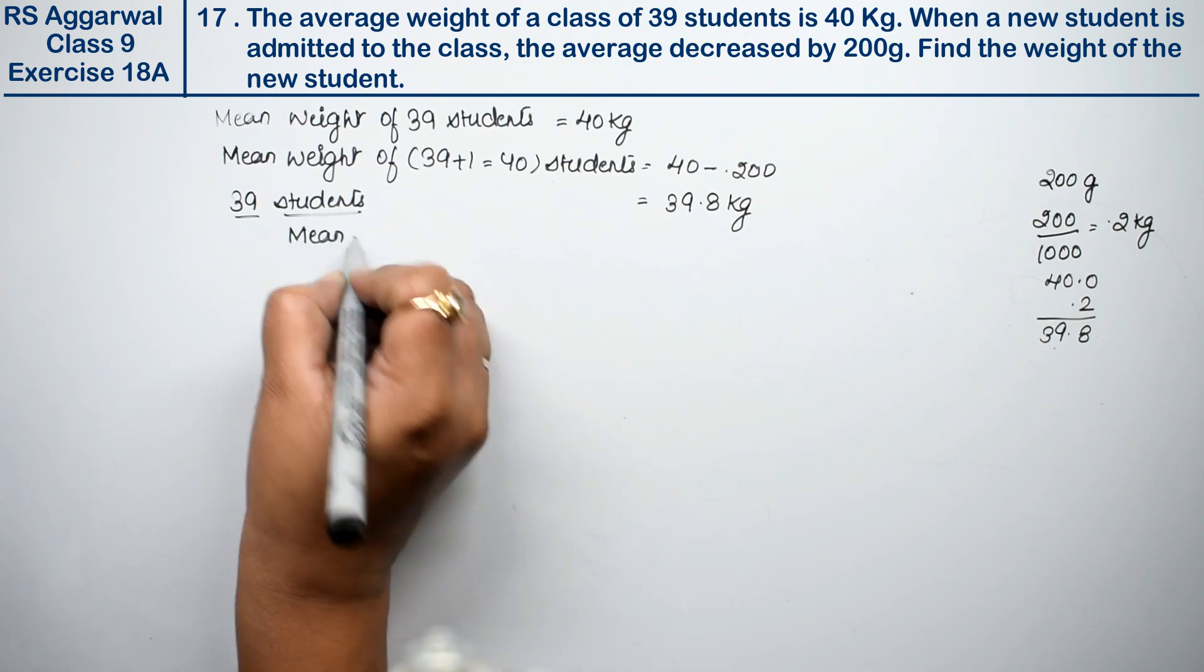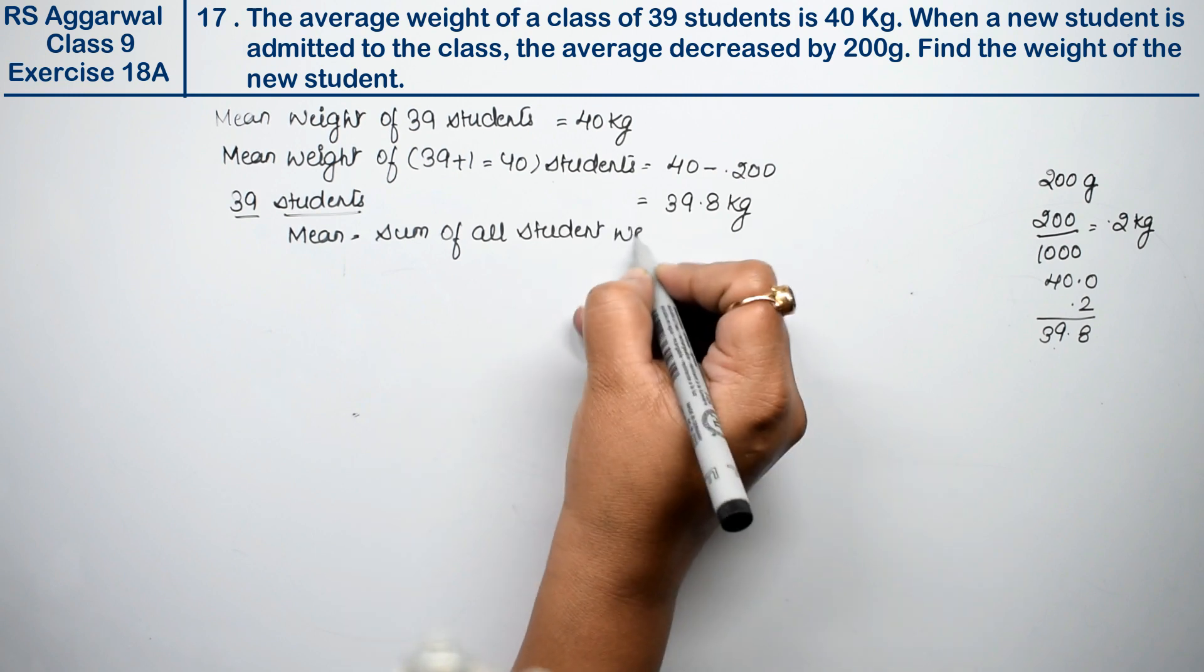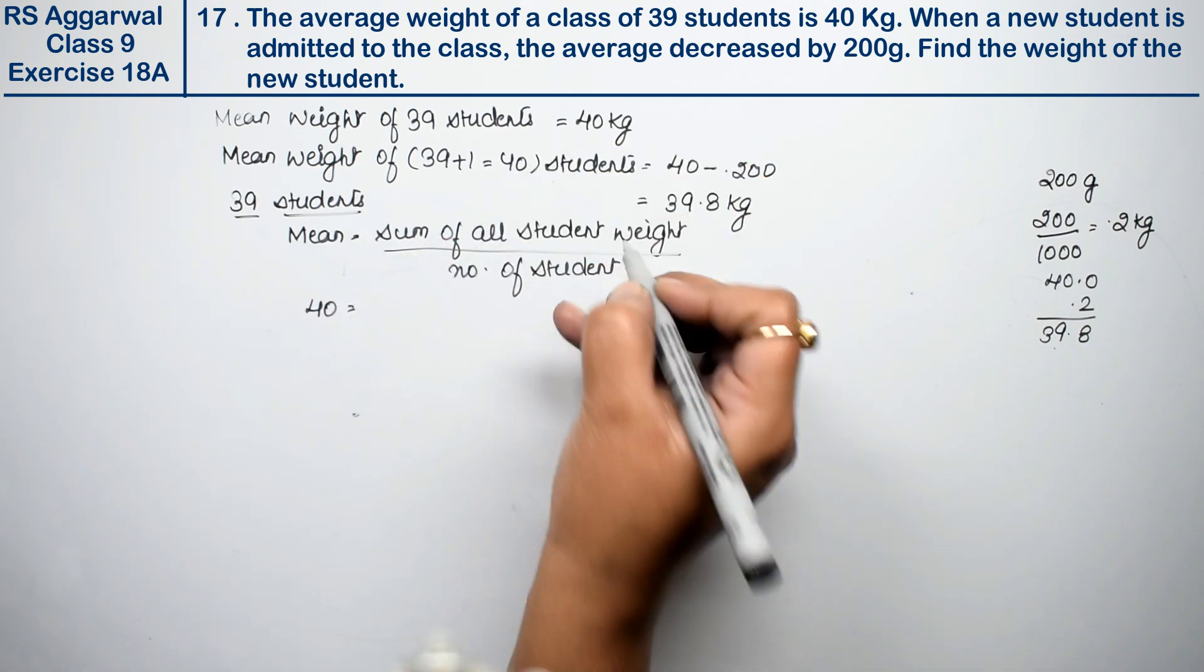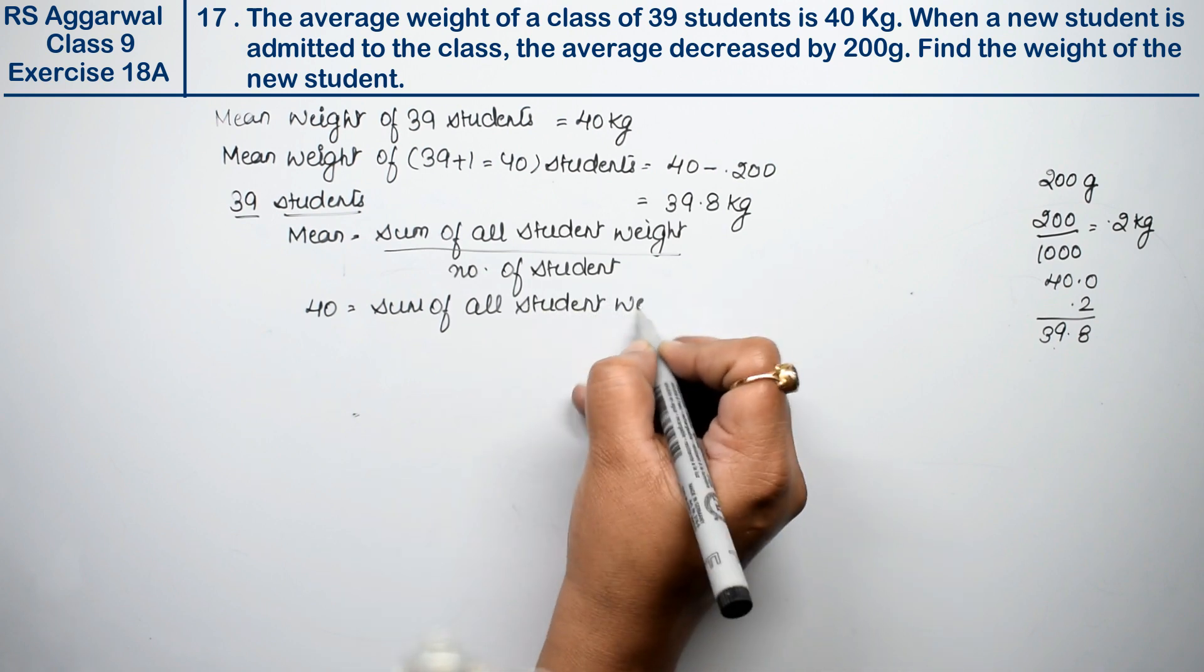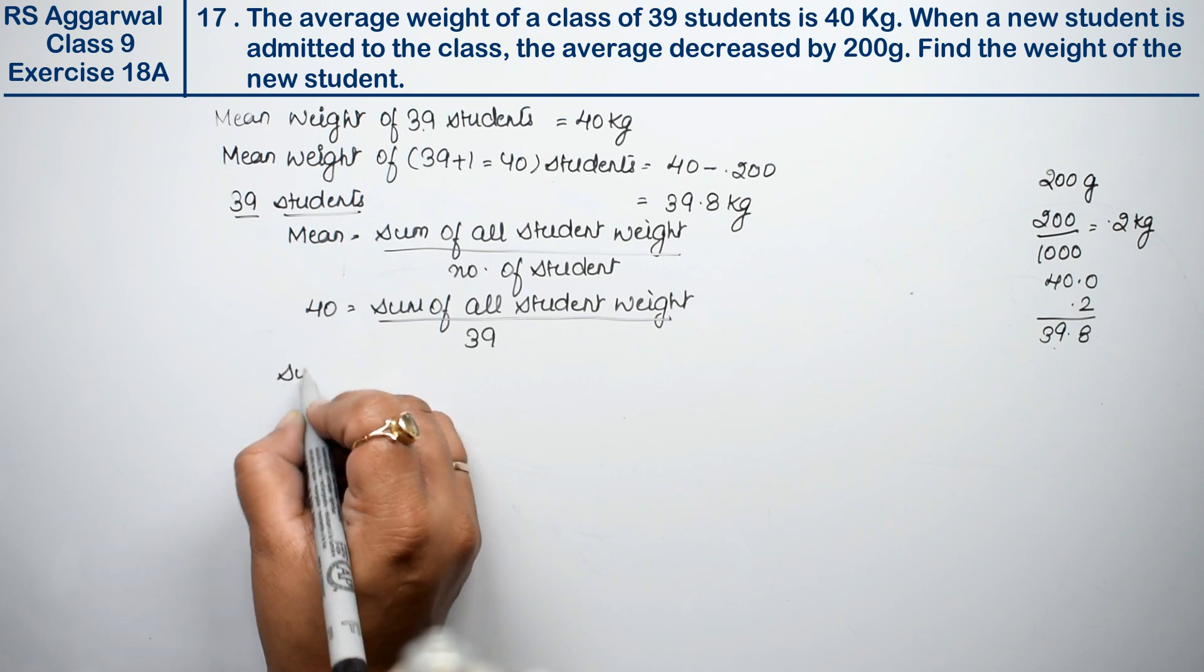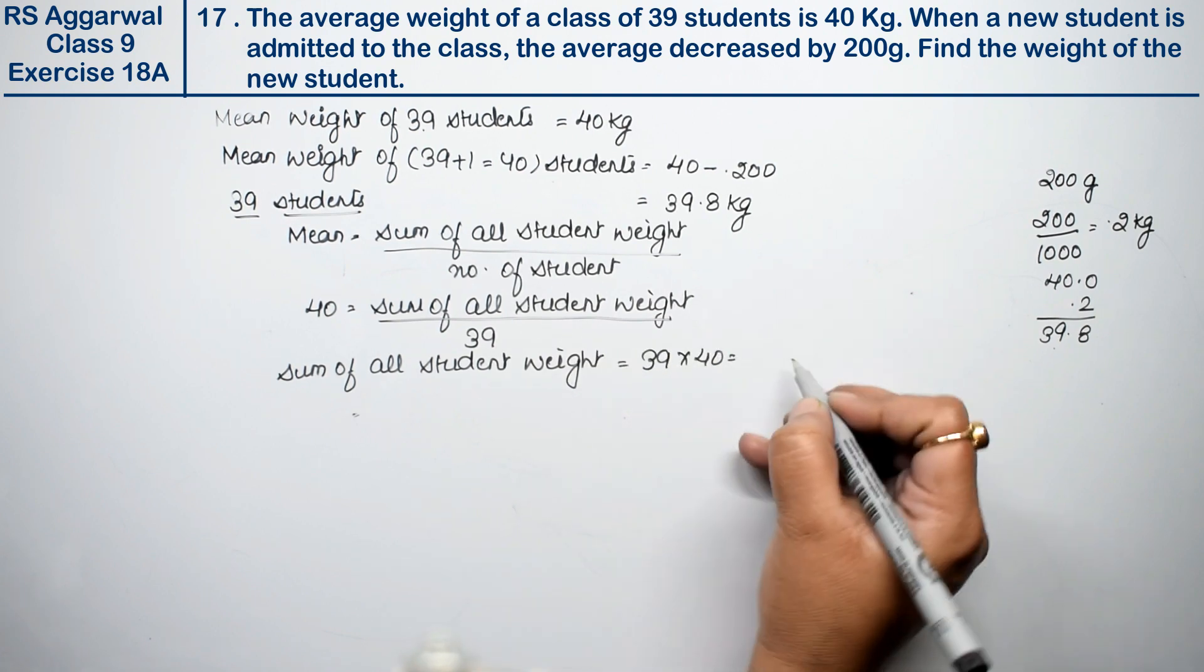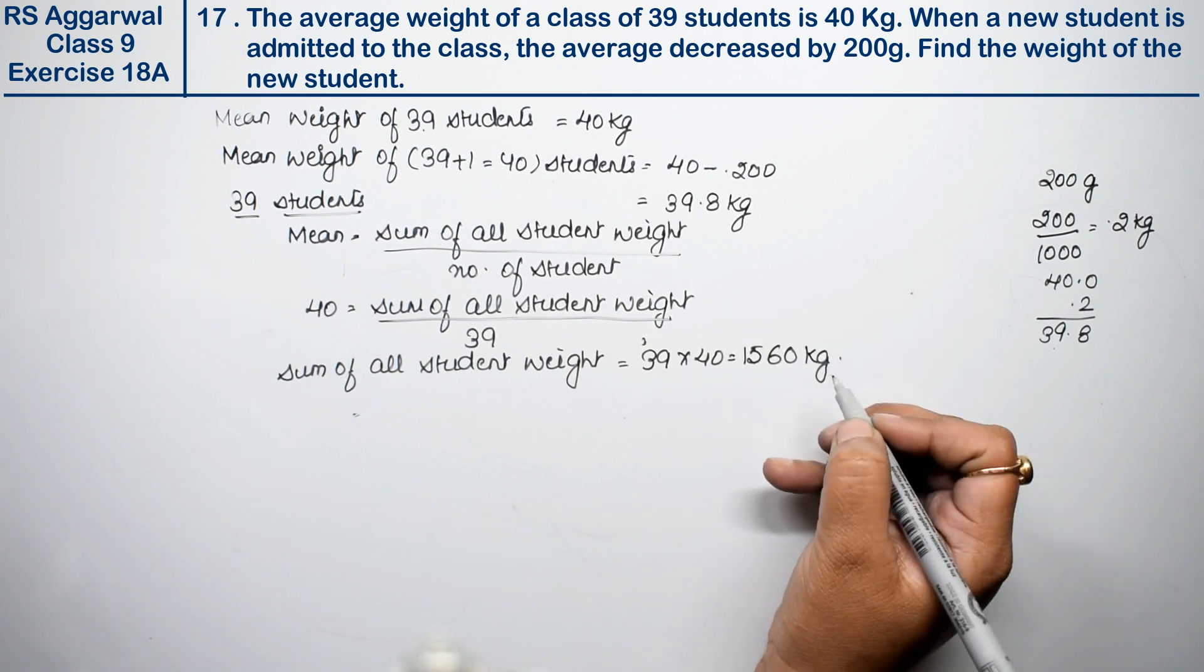Mean was sum of all student weight divided by number of students. Mean was 40 equals sum of all student weight divided by how many? 39. This was in the denominator, so it comes to multiply. Sum of 39 students' weight was: 39 multiplied by 40. That is, 0 as it is, 4 times 9 is 36, 3 carry, 12, 13, 14, and 15. So 1560 kg.